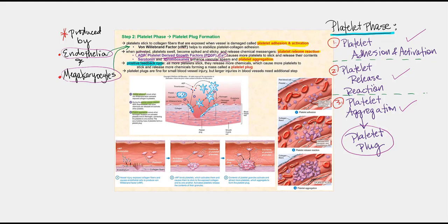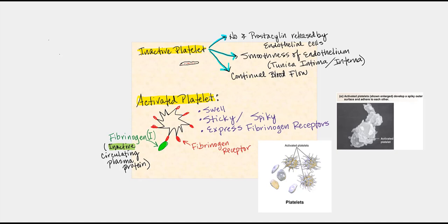It's important to distinguish an inactive platelet versus an activated platelet. By default, our platelets should be in the inactive form — only when we have some type of injury should a platelet be activated. To keep platelets defaultly inactive: first, endothelial cells of the tunica intima secrete nitric oxide and prostacyclin; second, having a smooth endothelium also prevents their activation; and third, having continual blood flow — anytime blood stagnates, there is always a potential of inadvertently activating a platelet.